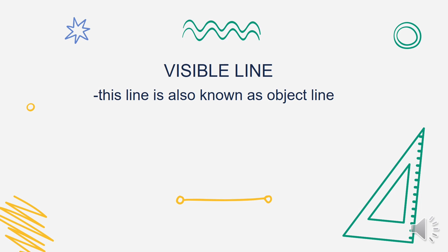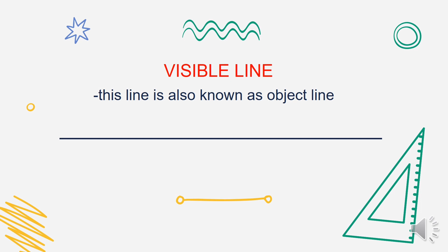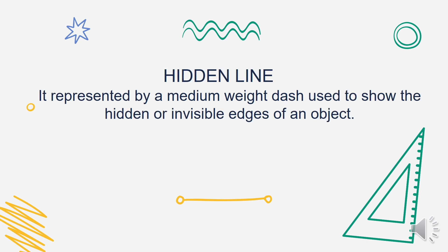The next one is the visible line. This line is also known as the object line. It usually shows the visible edges — medyo manipis lang siya, unlike the border line. Again, visible line is also known as object line.